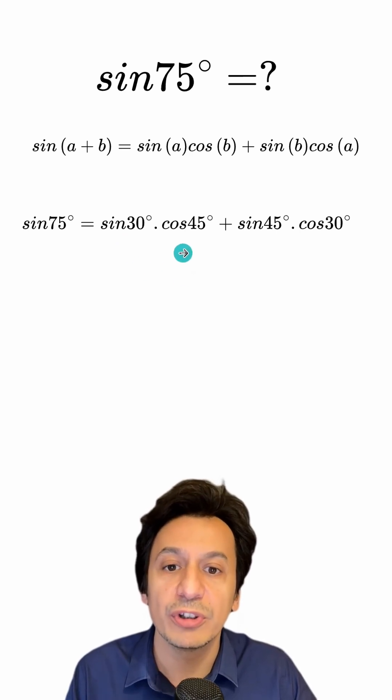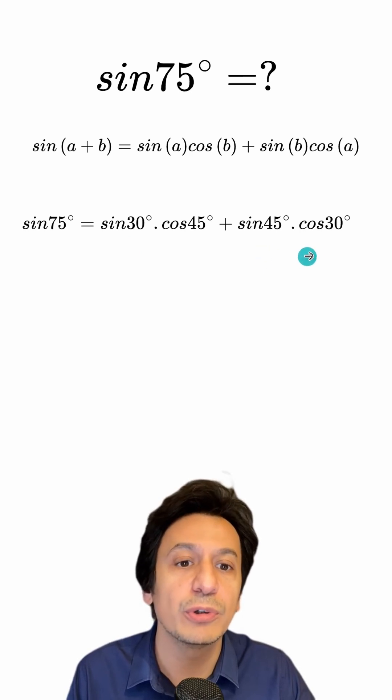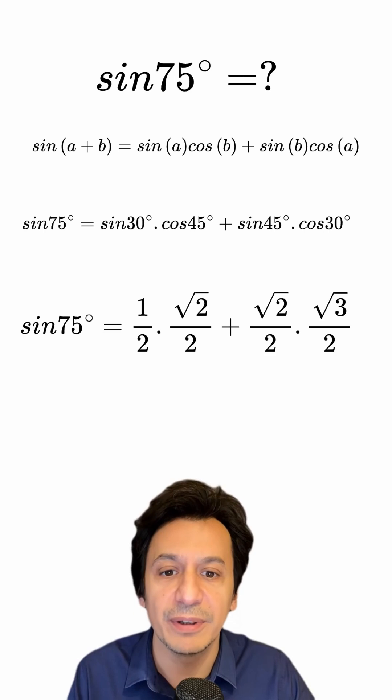Sine of 30 is 1 over 2, cosine of 45 is root 2 over 2, sine of 45 is also root 2 over 2, and cosine of 30 is root 3 over 2. Let's write these in their places.